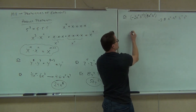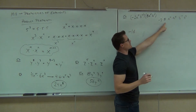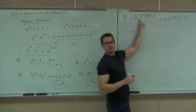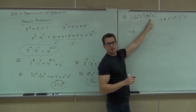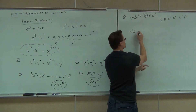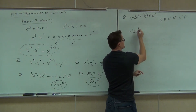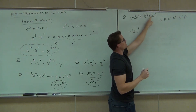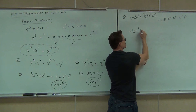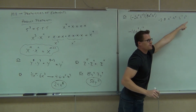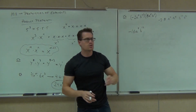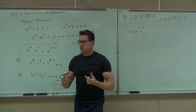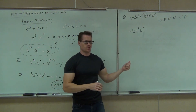Negative 2 times 8 gives you negative 16. a to the 4th times a to the 5th gives you a to the 9th. b to the 10th times b to the 3rd gives you b to the 13th. So you get negative 16 a to the 9th b to the 13th, and you can get the same thing either way — showing the middle step or going directly, provided you understand that the product property must be applied.